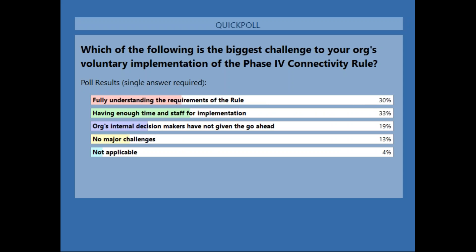The results: 33% saying having enough time and staff for implementation. 30% saying fully understanding the requirements — hopefully this webinar is helpful. 19% saying the organization's internal decision makers have not given the go-ahead. 13% saying no major challenges, and then 4% saying not applicable.